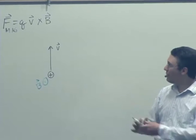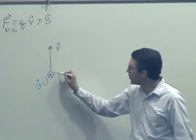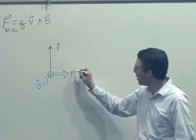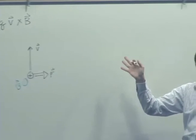We said, V cross B, thumb points that way, multiplied by a positive charge. We get a force in that direction. We saw this force is then going to always stay perpendicular to the velocity.